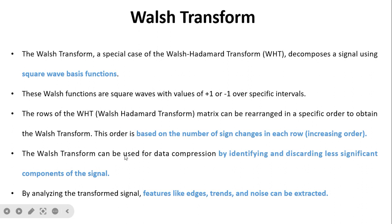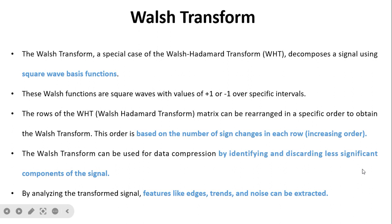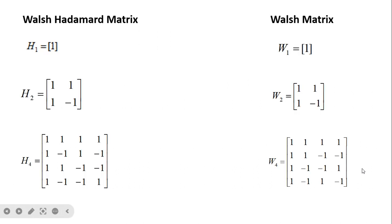The Walsh transform can be used for data compression by identifying and discarding the less significant components of the signal. By analyzing the transform signal, features like edges, trends, and noise can be extracted. Now we will see how we can obtain the Walsh matrix from the Walsh-Hadamard matrix.